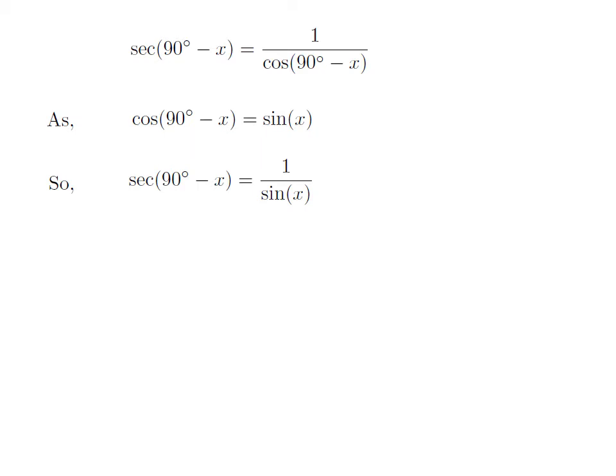Let's apply the above identity in the above expression of secant of 90 degree minus x. So, secant of 90 degree minus x is equal to 1 divided by sine x.